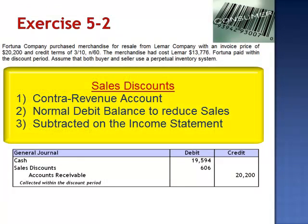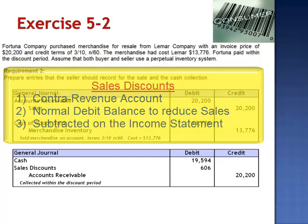Sales discounts will be subtracted from sales on the income statement. As a contra account, its purpose is to reduce the value of another account — in this case, sales — in a way that preserves the original information. We want to be able to track the total amount of our sales and to what extent our customers are taking advantage of the 3% terms offered.